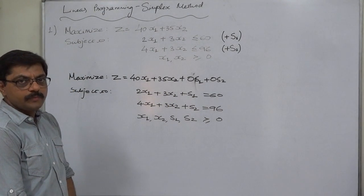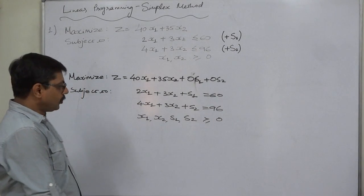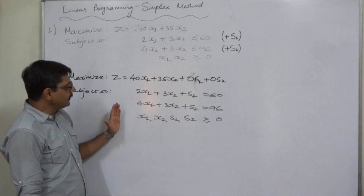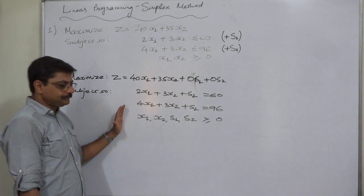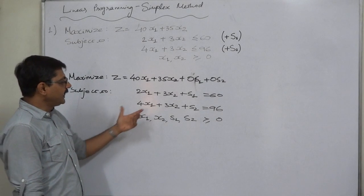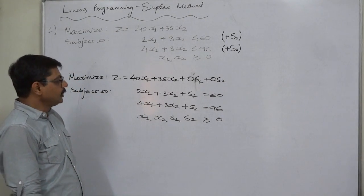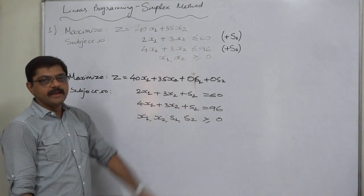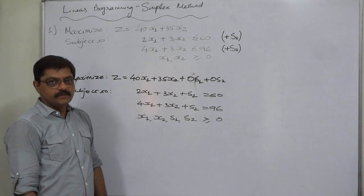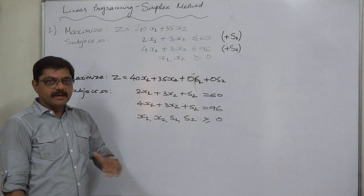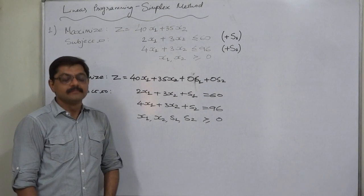We need to prepare a simplex table or simplex matrix to solve this. The first simplex table will be prepared from the equality form of the linear programming problem, in which we assume no production of x1 and x2. Therefore, s1 and s2 become the solution variables. We will prepare simplex table number 1 in the next lecture. Thank you.